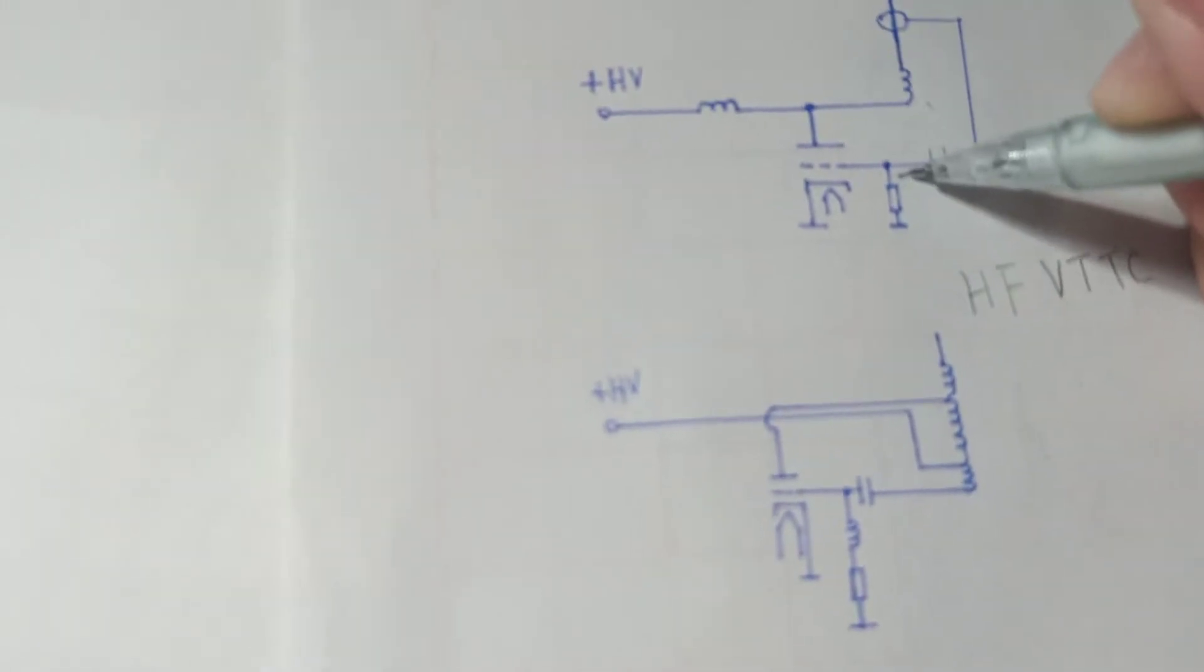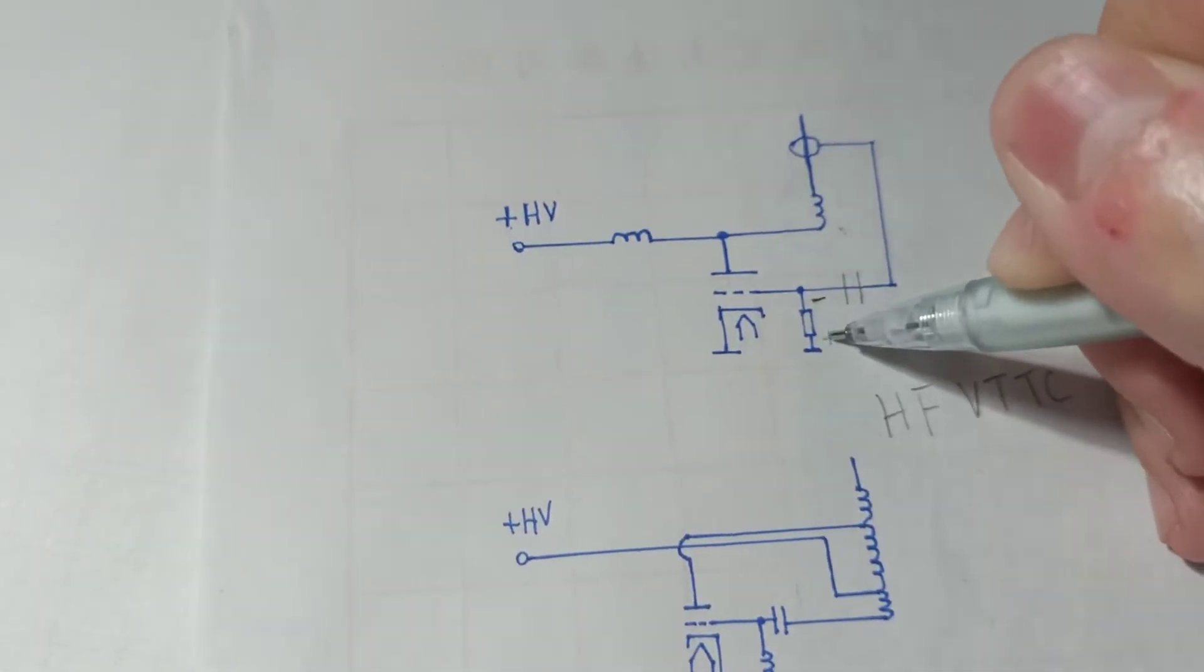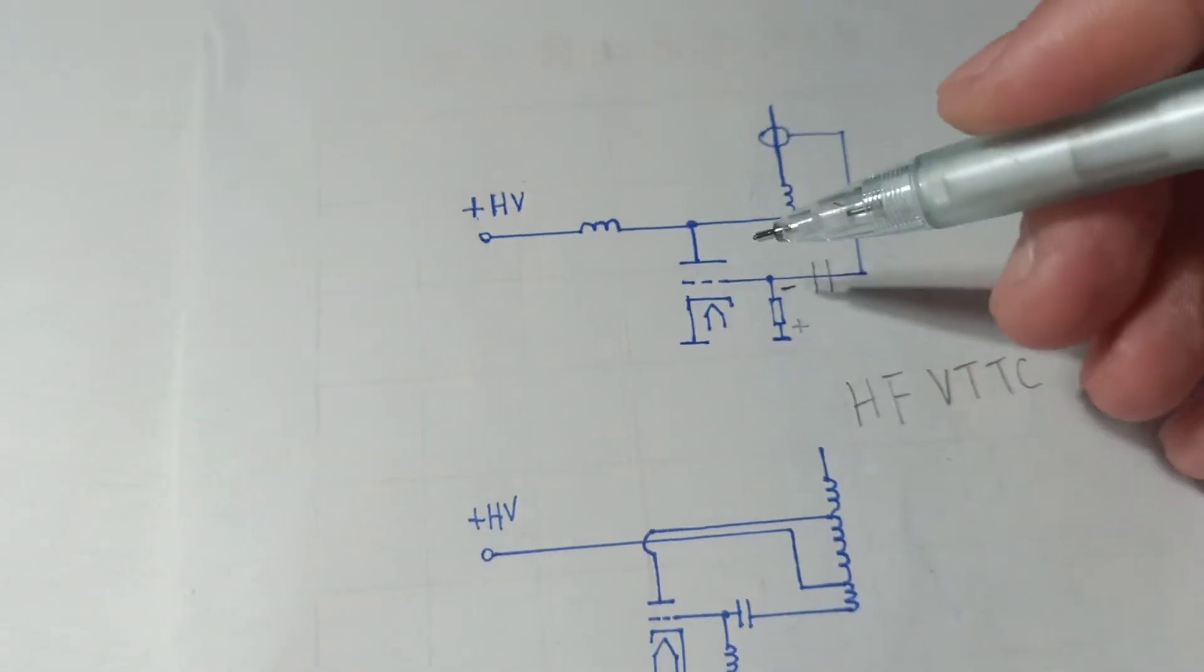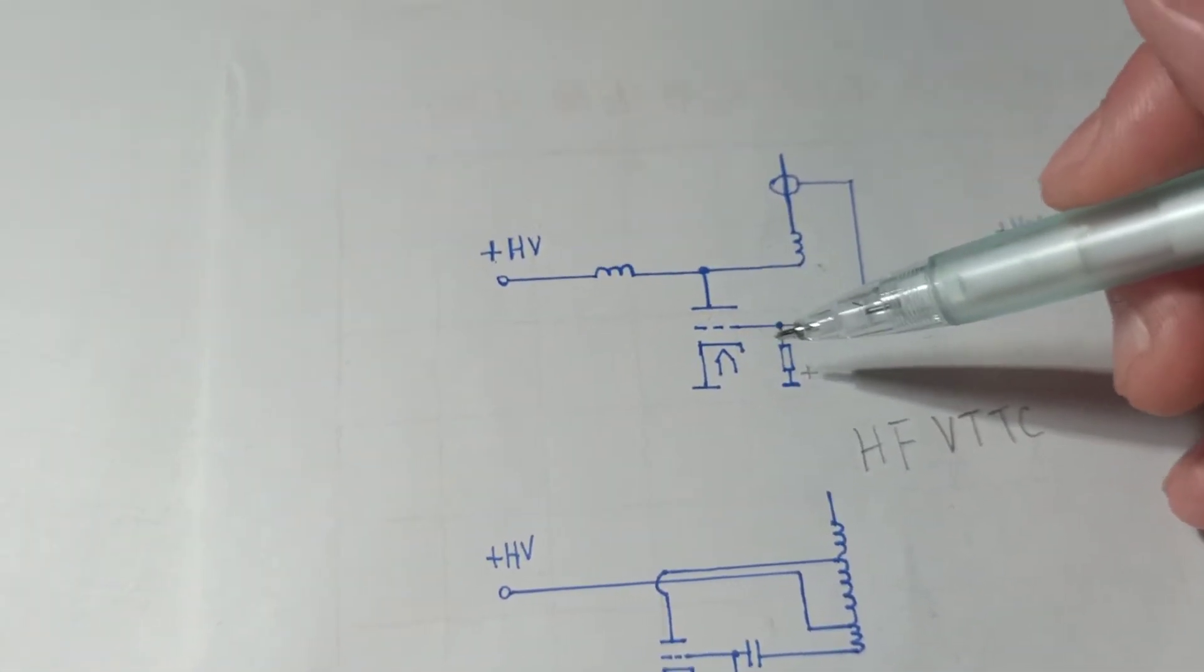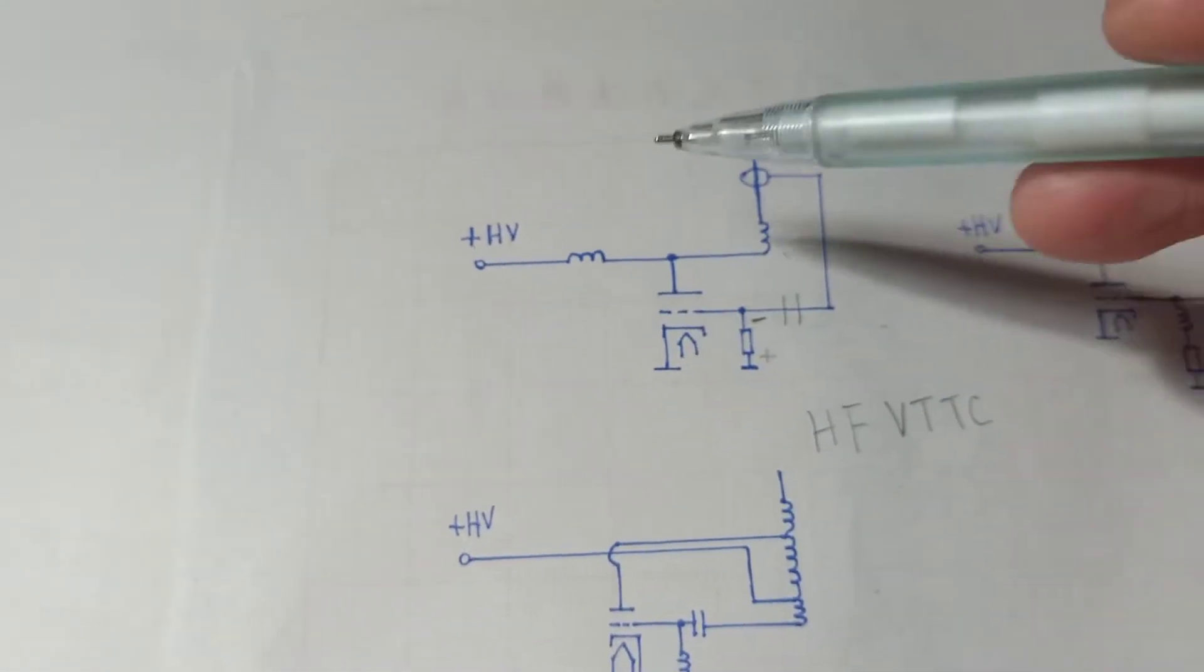This one here is minus, and here is positive on ground, so you will have a good negative voltage on the tube's grid. This circuit functions easily.